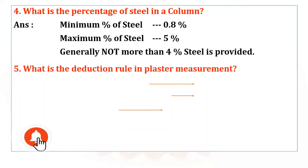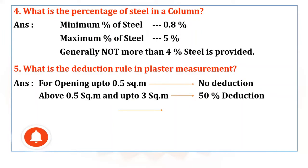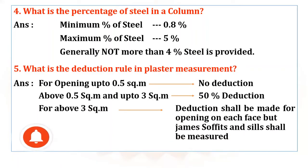Coming to the fifth question: What is the deduction rule in plaster measurements? For openings up to 0.5 square meters, no deduction is made. For openings between 0.5 square meters and 3 square meters, a 50% deduction is applied. Above 3 square meters, deductions shall be made for openings on each face, but jambs, soffits, and sills shall be measured additionally.